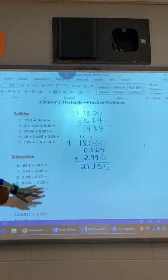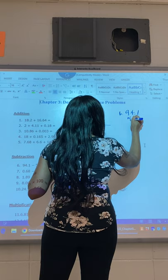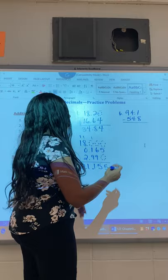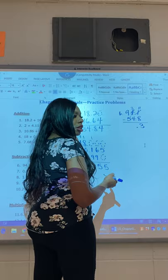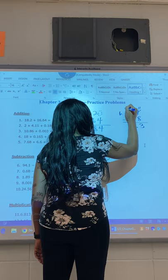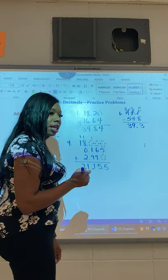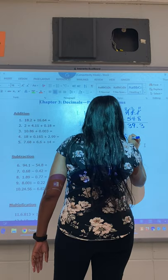Let's go to subtraction, number six. 94 and one tenth minus 54 and eight tenths. Notice one minus eight, I need to borrow. I want to borrow from the four making the four a three and this becomes eleven. Eleven minus eight is three and bring down your decimal. I have three minus four, so let me borrow from the nine making the nine an eight and this becomes a thirteen. Thirteen minus four is nine and eight minus five is three. So it's 39 and three tenths.